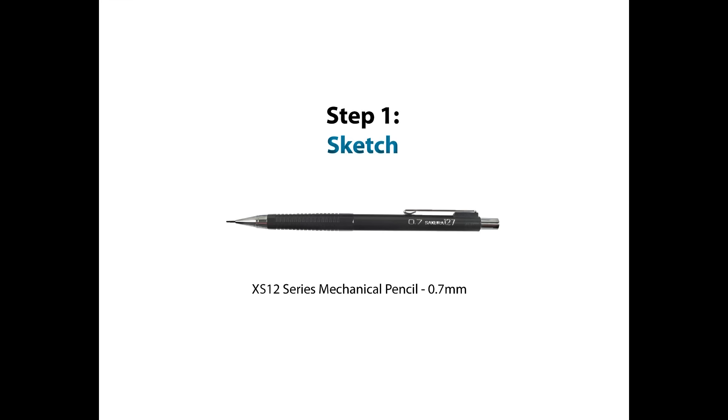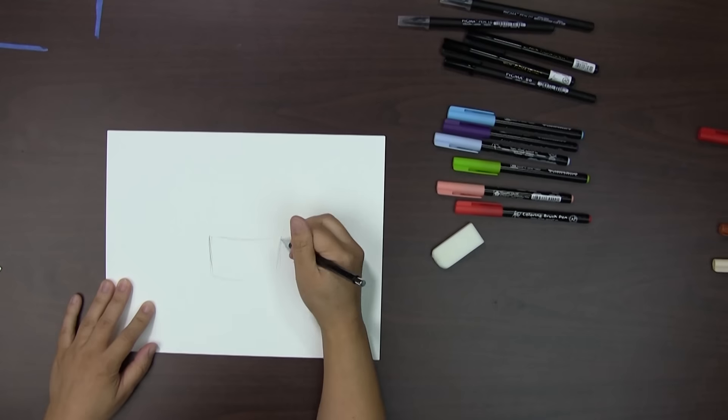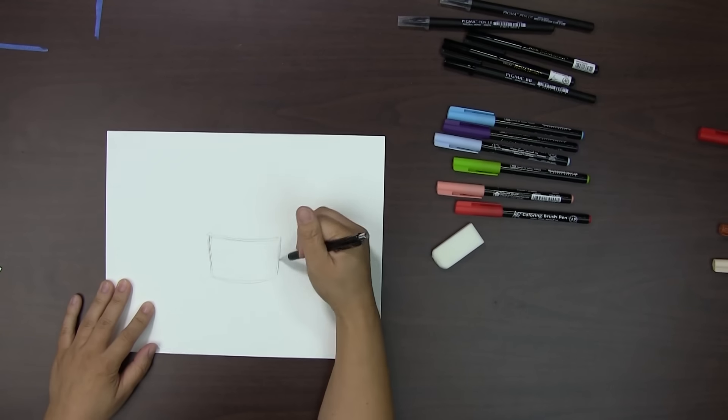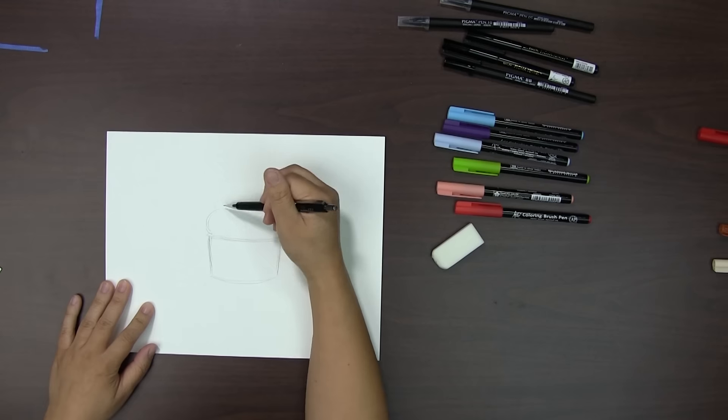Step 1 is sketching. I'll be using the XS12 mechanical pencil. A little background about chibi characters while I sketch. Chibi is a Japanese word that literally translates into small.